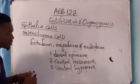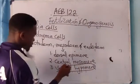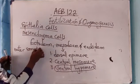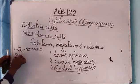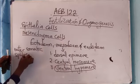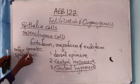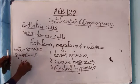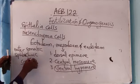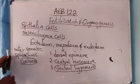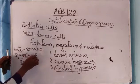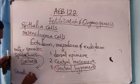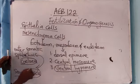The ventral hypomere differentiates into an outer somatic layer and an inner splanchnic layer. Between the outer and inner splanchnic is the coelom, which is actually a fluid-filled cavity. The splanchnic layer produces smooth muscle.